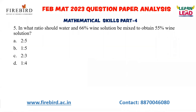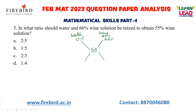Next: in what ratio should water and a 66% wine solution be mixed to obtain a 55% solution? This is an allegation and mixture question. Water has 0% wine and the wine solution has 66%. Write the mixture value (55%) in between. Taking the differences: 66 − 55 = 11 and 55 − 0 = 55. So the ratio is 11 : 55, which simplifies to 1 : 5. That is your answer.